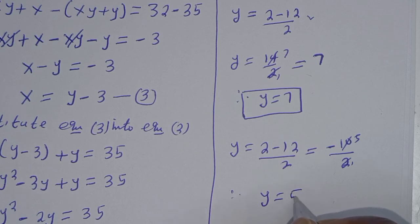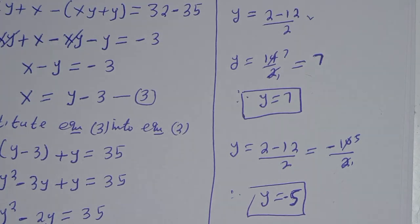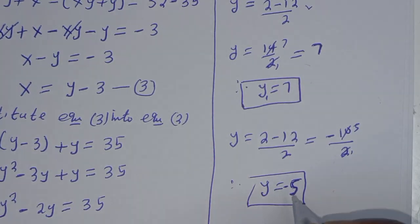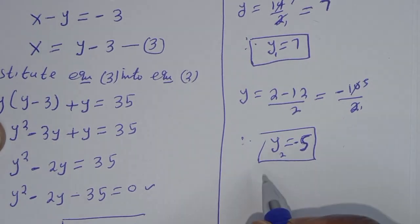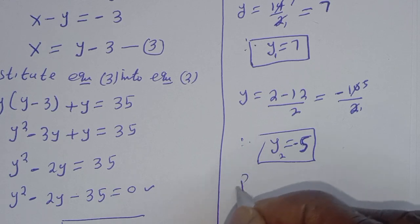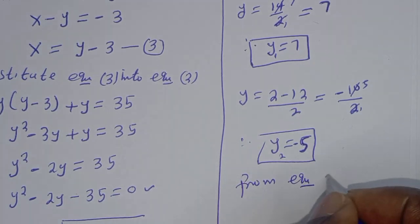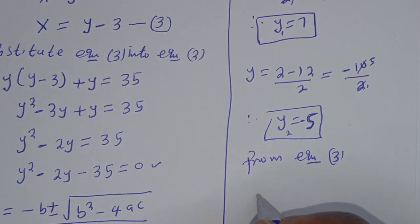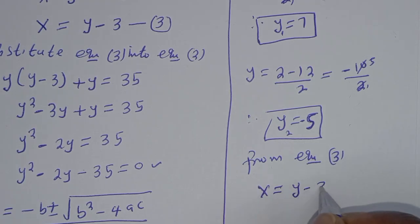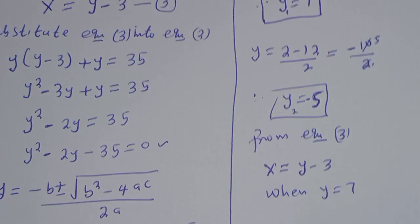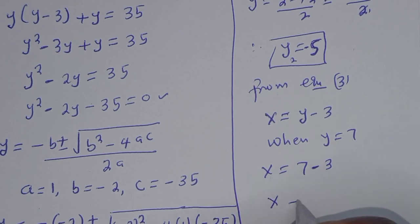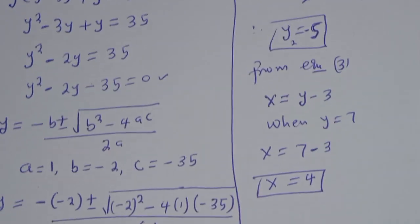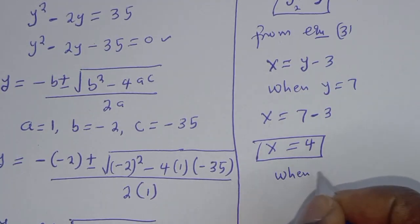We have y₁ equals 7 and y₂ equals negative 5. To find x, we substitute into equation 3: x equals y minus 3. When y equals 7, x equals 7 minus 3, so x equals 4.